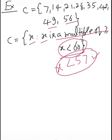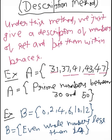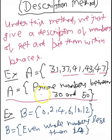Moving to the last one — the description method. This method is rarely used. Under this method, we just give the description of the members of the set and put that description within curly braces. For example, if set A has elements 31, 37, 41, 43, and 47, these are all prime numbers, so we write it as: {prime numbers between 30 and 50}.